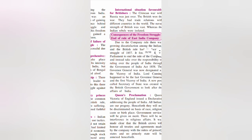Last but not the least, the international situation was favorable for the British. The Crimean War with Russia had just ended with a British victory. They had trade relationships with different countries and vast naval strength, whereas the Indian rebels were isolated. So international relations favored the British because they had proved they were strong.